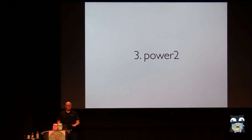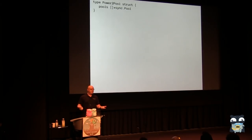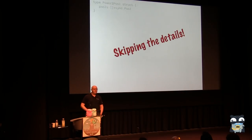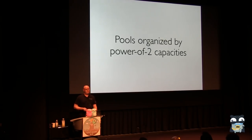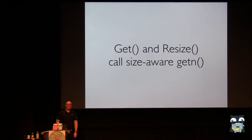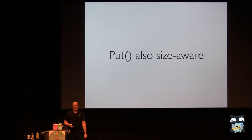The power-of-two strategy works much like sync.Pool but now we have a sync.Pool per size bucket, organized by powers of two, so we can get exactly the size we want. Rather than one sync.Pool, we have an array of sync.Pools for different size categories. Get and Resize call a size-aware GetN function to get something from a pool of an appropriate size, and Put is also size-aware to stick things back into the right bin.